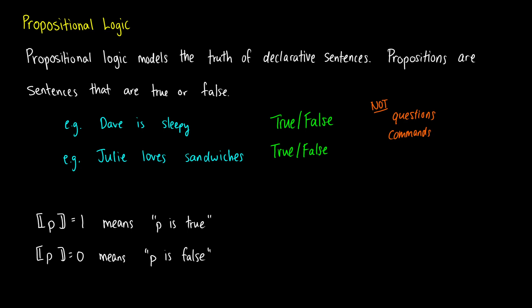We have a notation for this — we put double brackets around propositions to indicate the truth value. The truth value of p equals 1 means that p is true, and if the truth value of p is 0, that means p is false. You may see these written as T's and F's in some books, but everywhere outside of intro philosophy textbooks, we use 1s and 0s — that's just a convention to get used to.